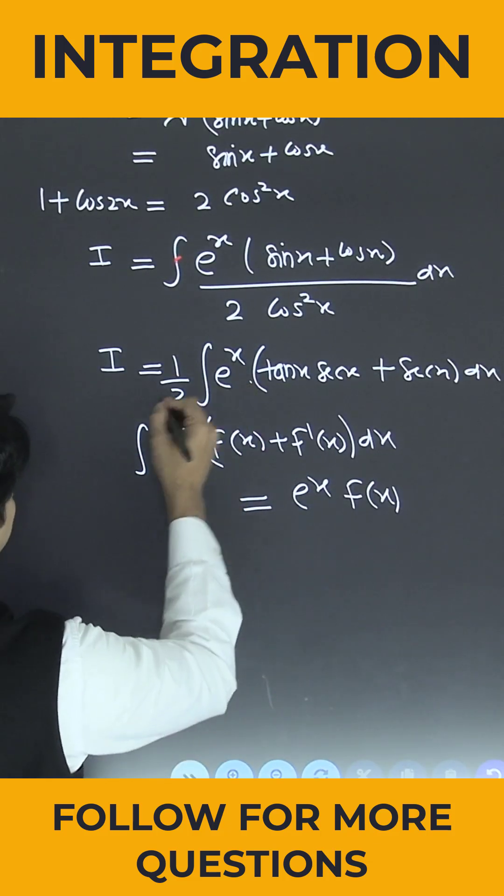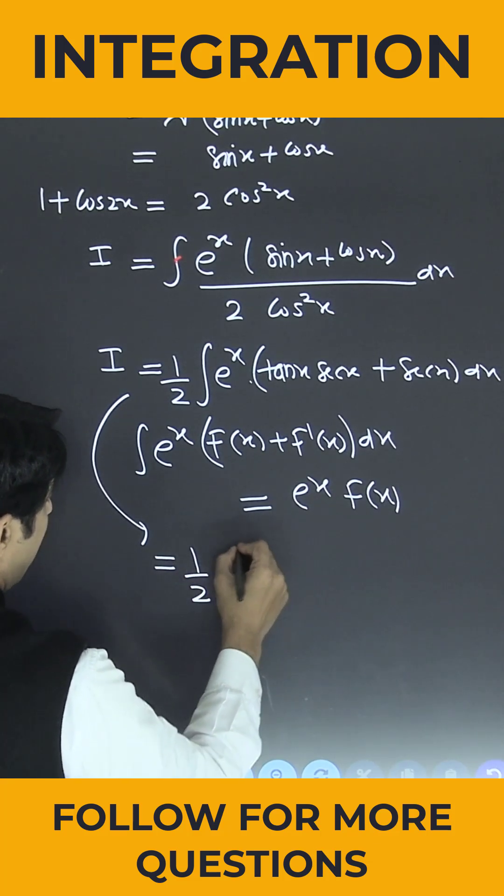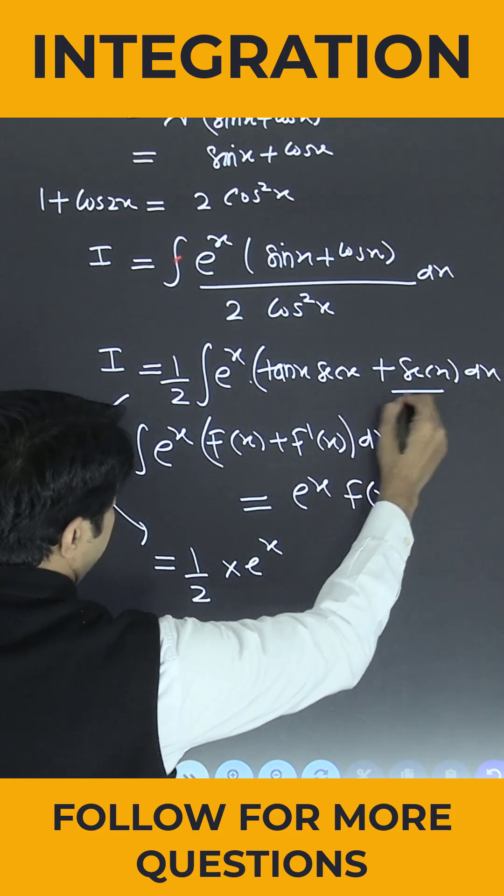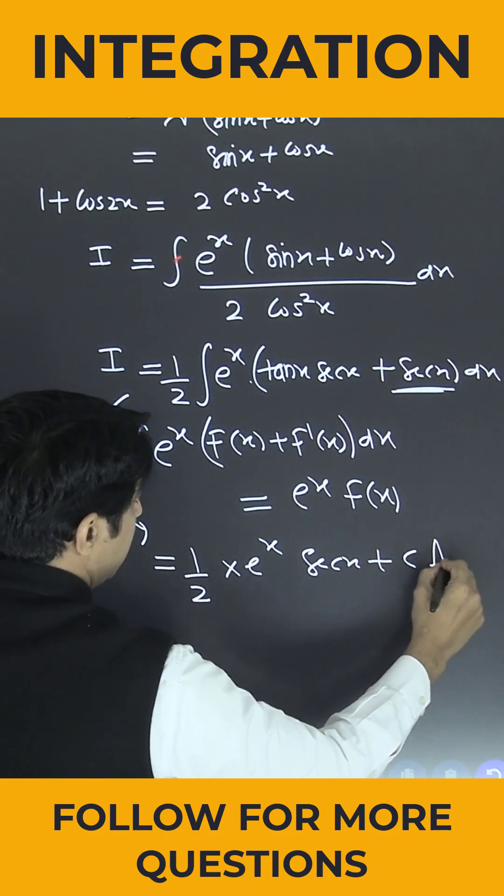Now can I write directly? So this can be written as one-half times e^x. What is the value of f(x)? It's nothing but sec x. So the answer is (1/2)e^x sec x + c.